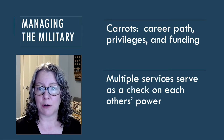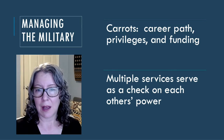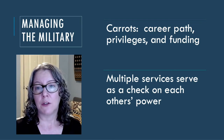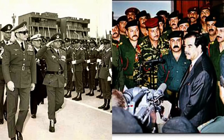Having multiple separate security forces allows a leader to play them off each other and keep one force in reserve to protect the dictator's personal security. For example, Iran created the Islamic Revolutionary Guard Corps (IRGC) to monitor internal and external security, since the traditional military was not considered sufficiently loyal. Similarly, Saddam Hussein created the Republican Guard in Iraq to directly report to him.